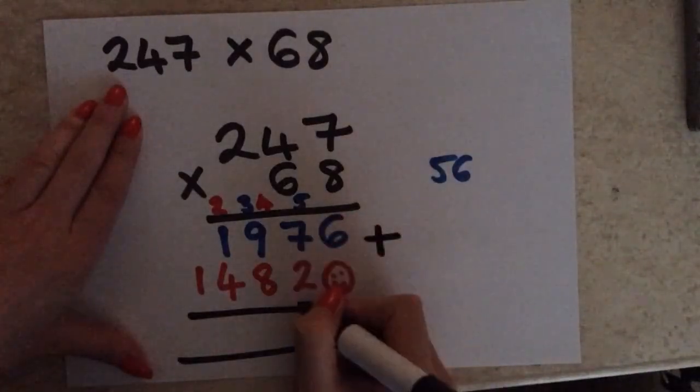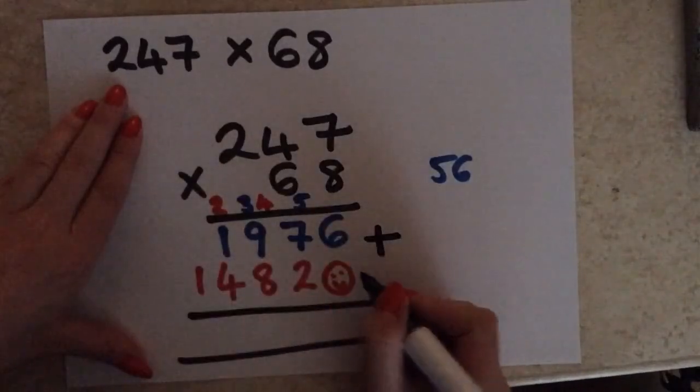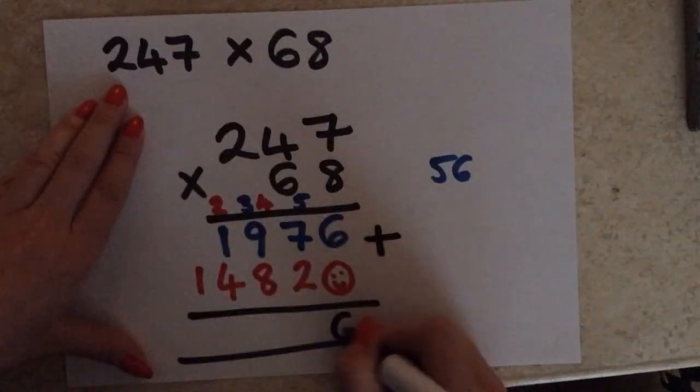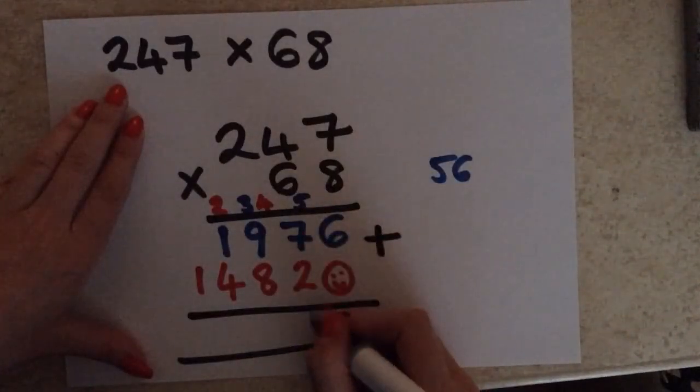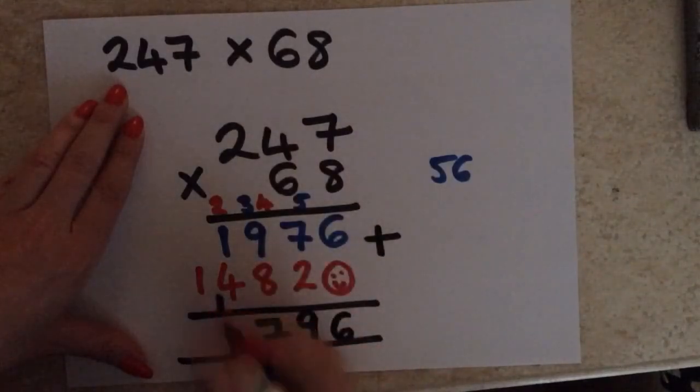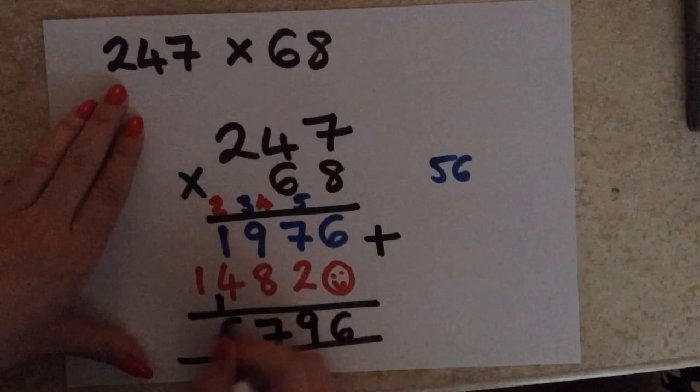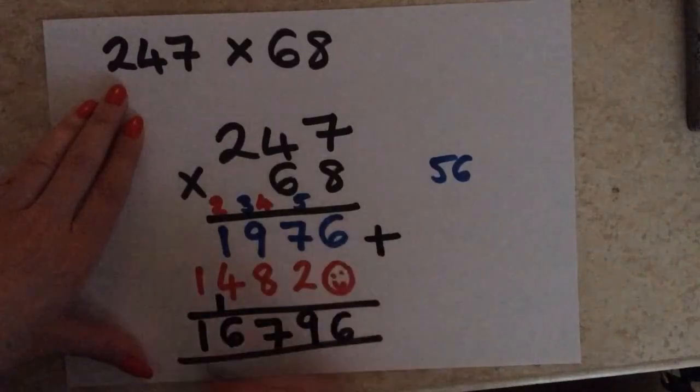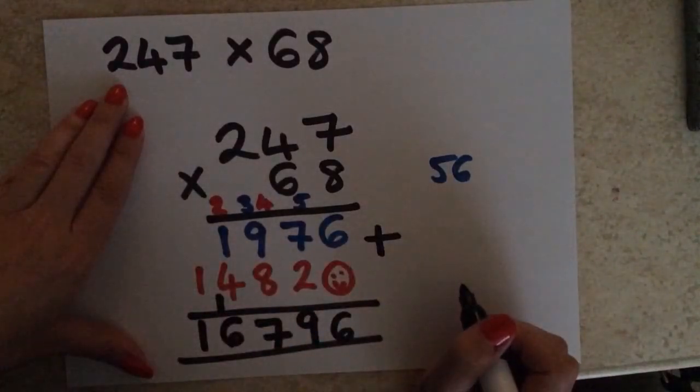So, my units, my tens, my hundreds, my thousands, everything's perfectly in line. So, we've got 6, 7 plus 2 is going to give me 9, 9 plus 8 is going to give me 17, carry the 1, 4, 5, 6, and we've got the 1, and that's your final answer, 16,796.